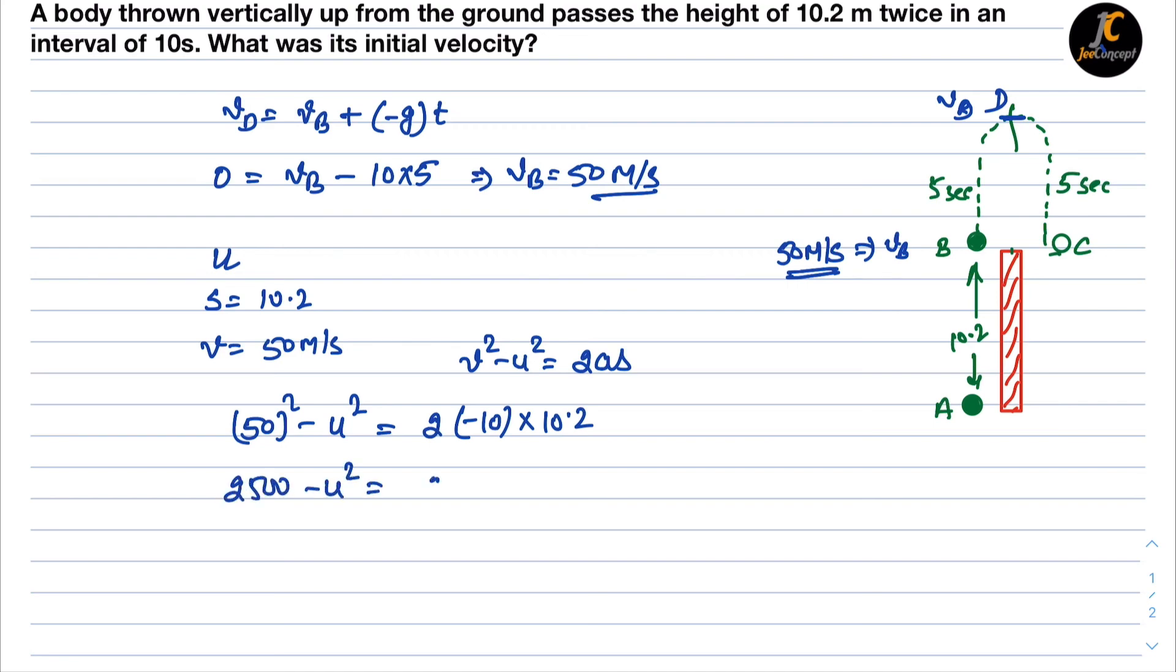So this will become 2500 minus u² equals minus 204. So this will become u² equals minus 204 minus 2500, so that means minus u² equals minus 2704. So minus sign will cancel out and u will become under the root 2704, that means it is 52 meters per second.